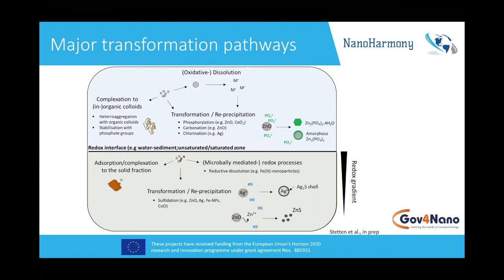We distinguish between two different environments: the oxic and the anoxic environment. The anoxic environment includes wastewater treatment plants, micro-environments and flocs, but mainly sediments of lakes and rivers. In the anoxic part, we consider the control of the atmosphere — working under anoxic conditions — and we are considering sulfidation mainly as the major process happening there.